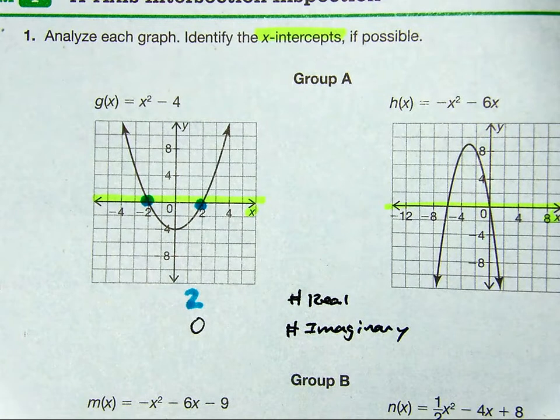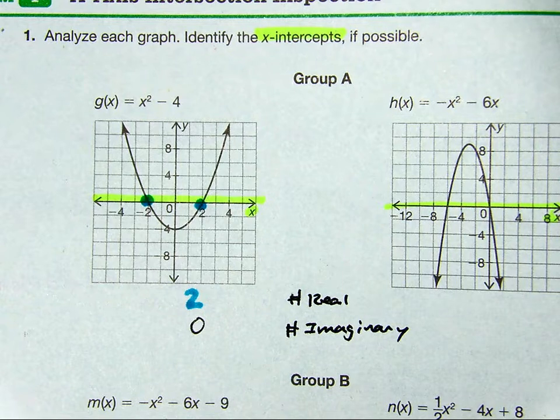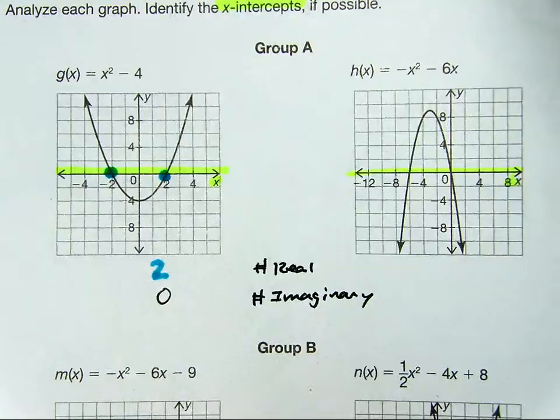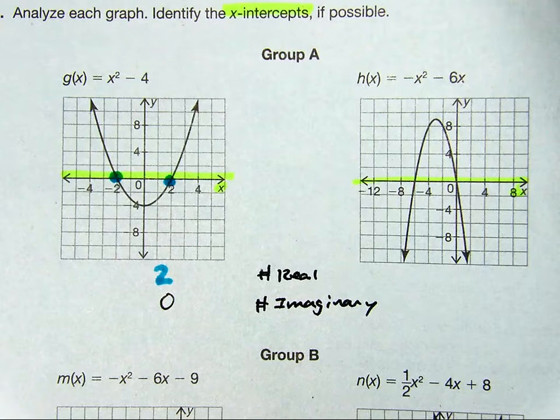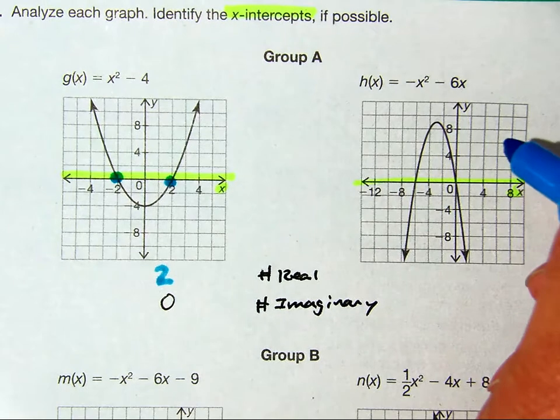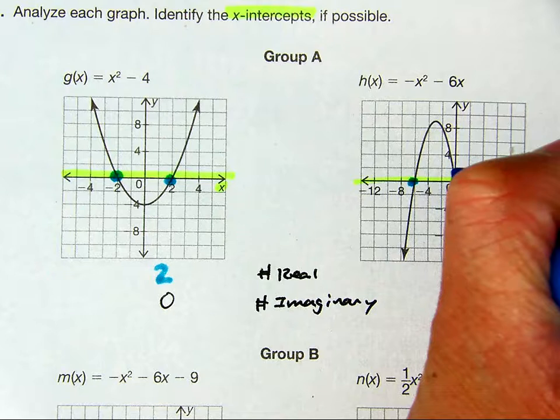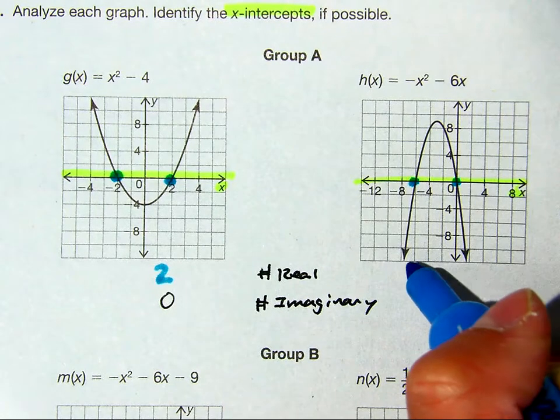Let's look at this example over here. How many times is it across the x-axis? Two. That's the definition of a real zero. How many imaginaries do we have? Zero.